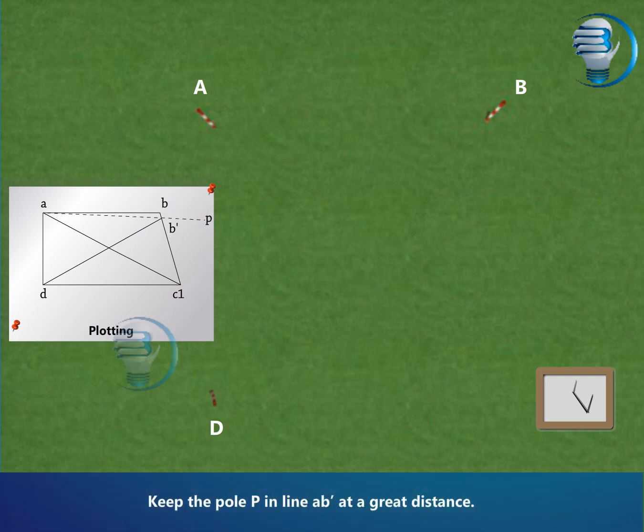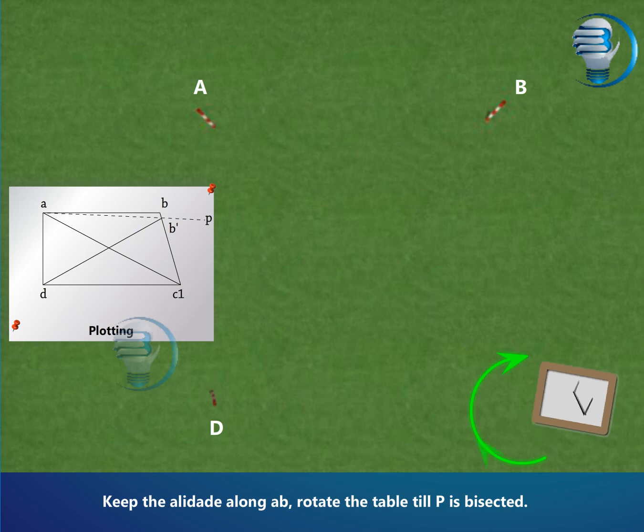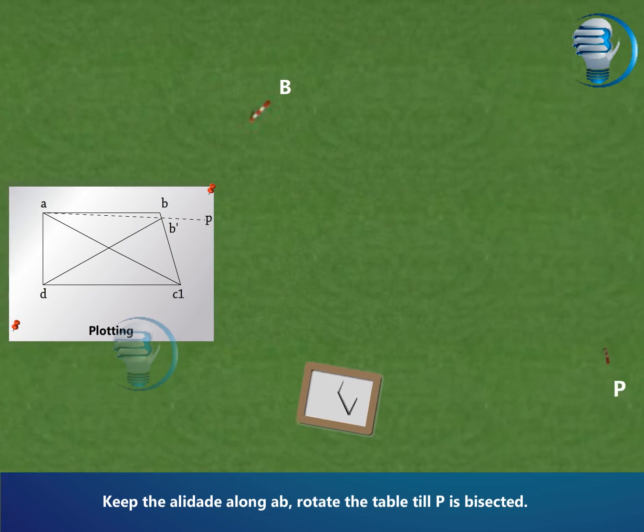Keep the pole P in line ab' at a great distance. Keep the alidate along ab'. Rotate the table till P is bisected.